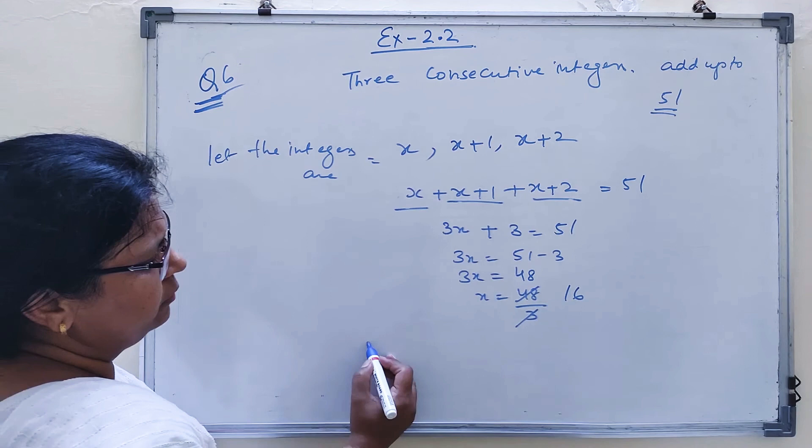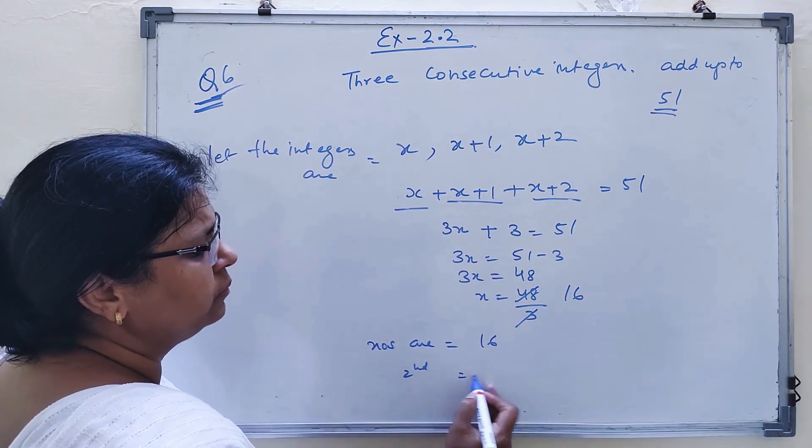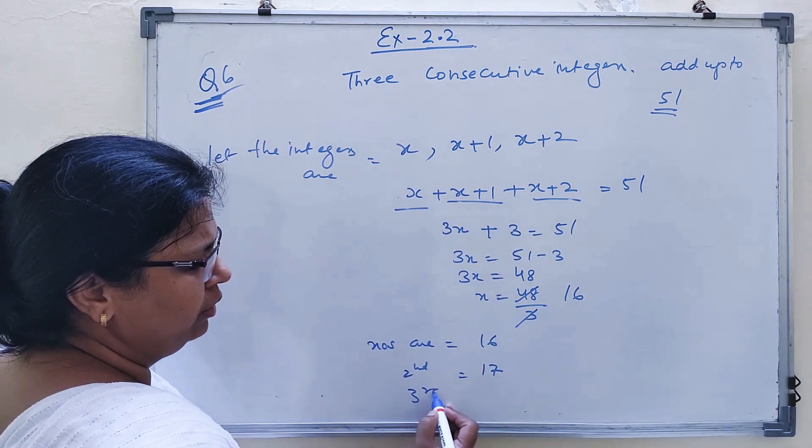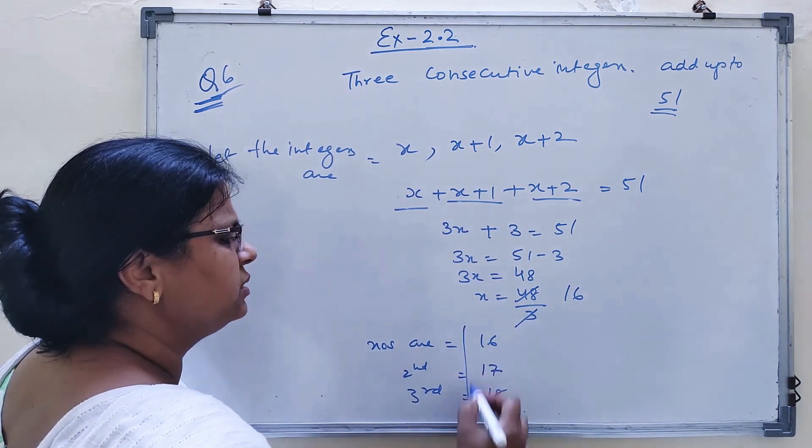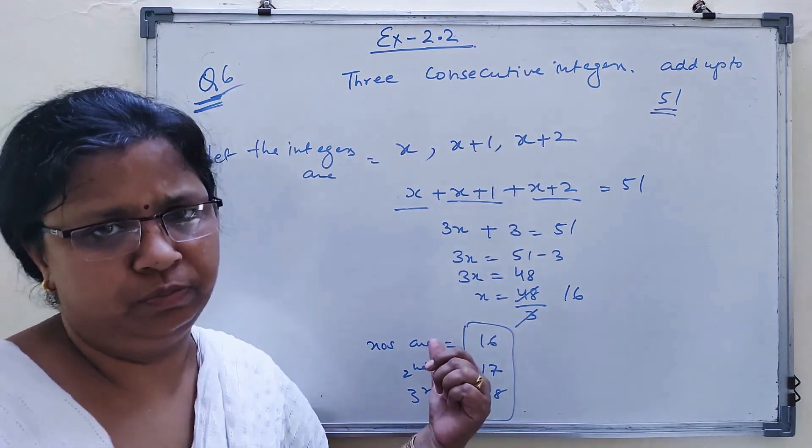What are the numbers? First number is 16, second number is 17, third number is 18. This is the answer. Clear students. Next questions we will solve in the next video.